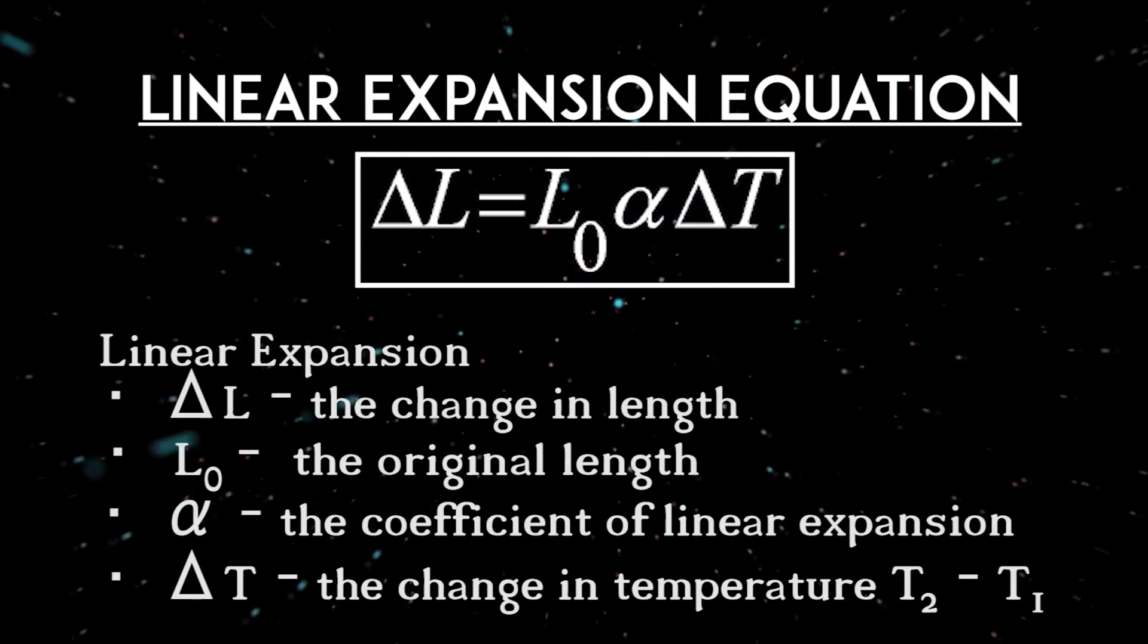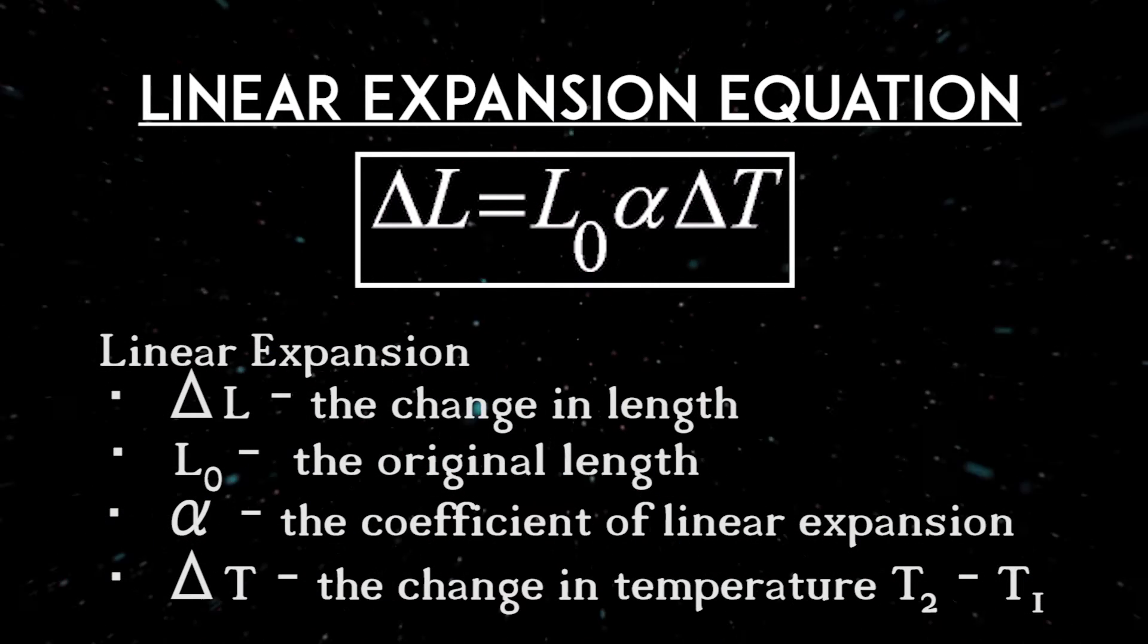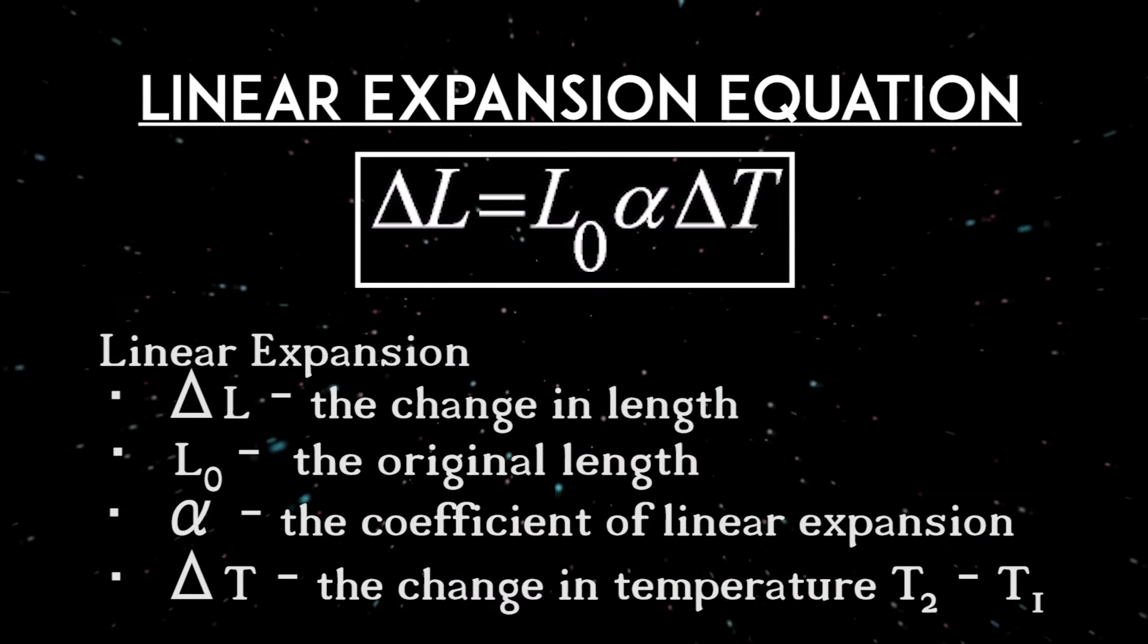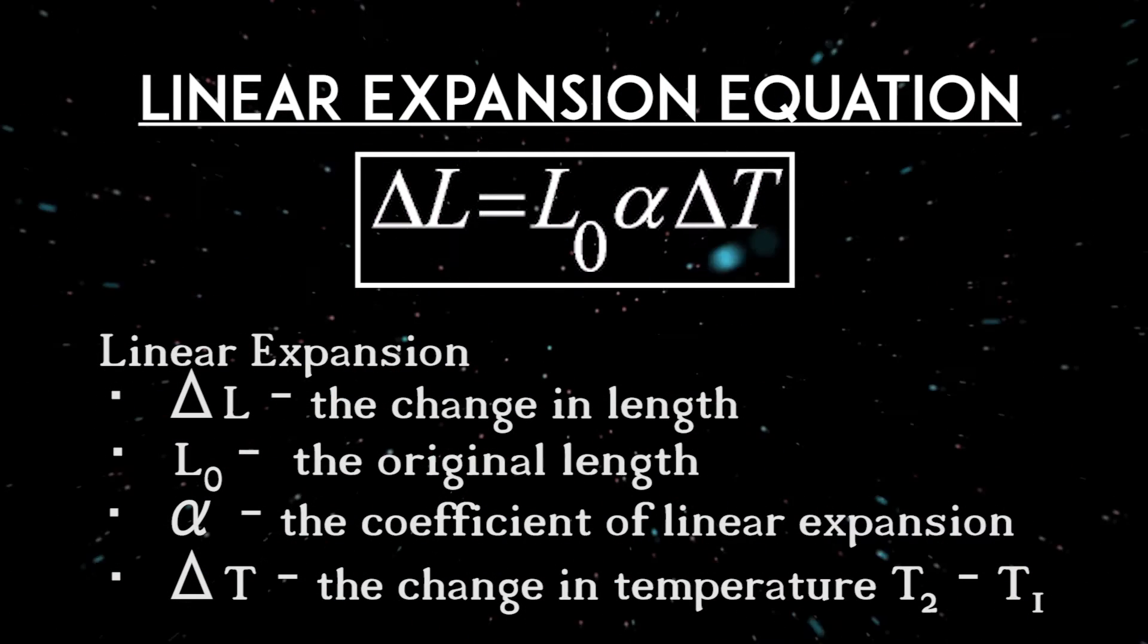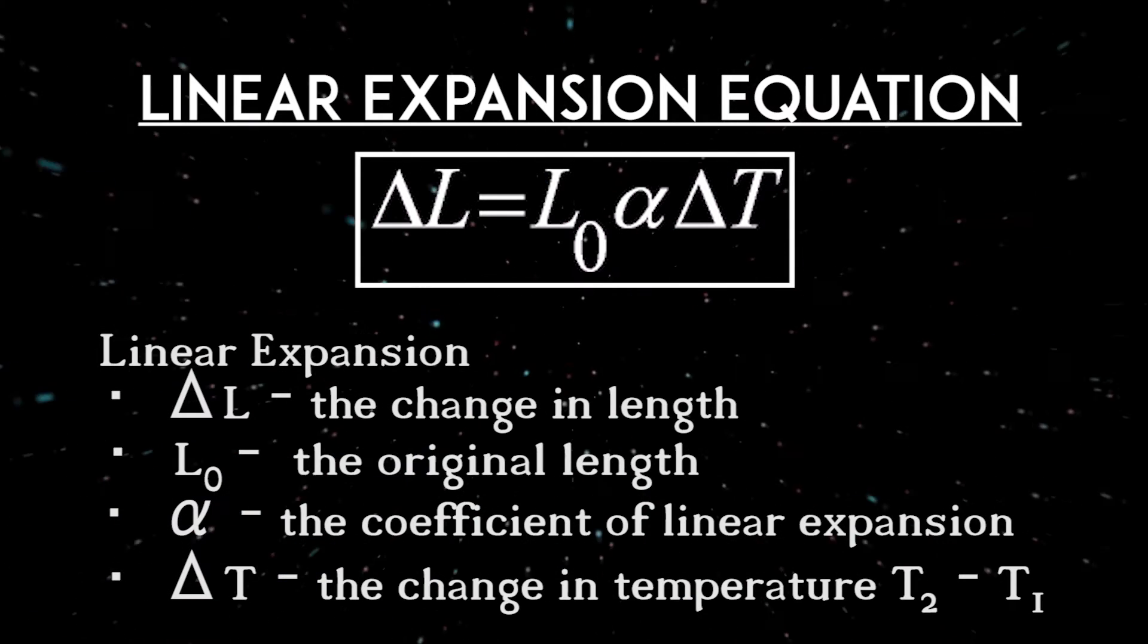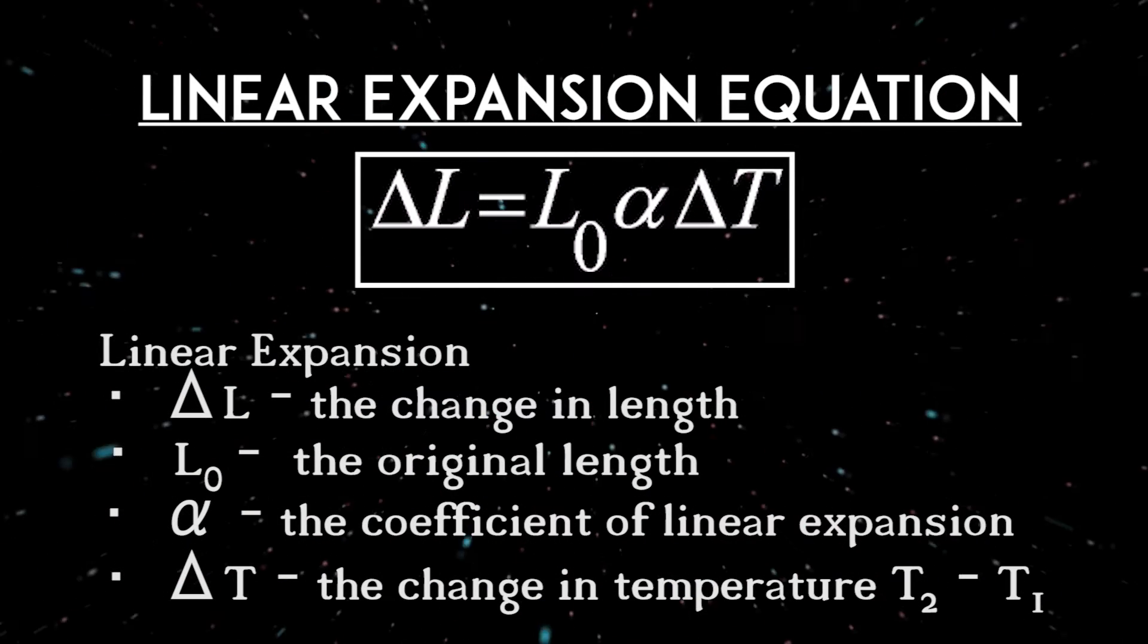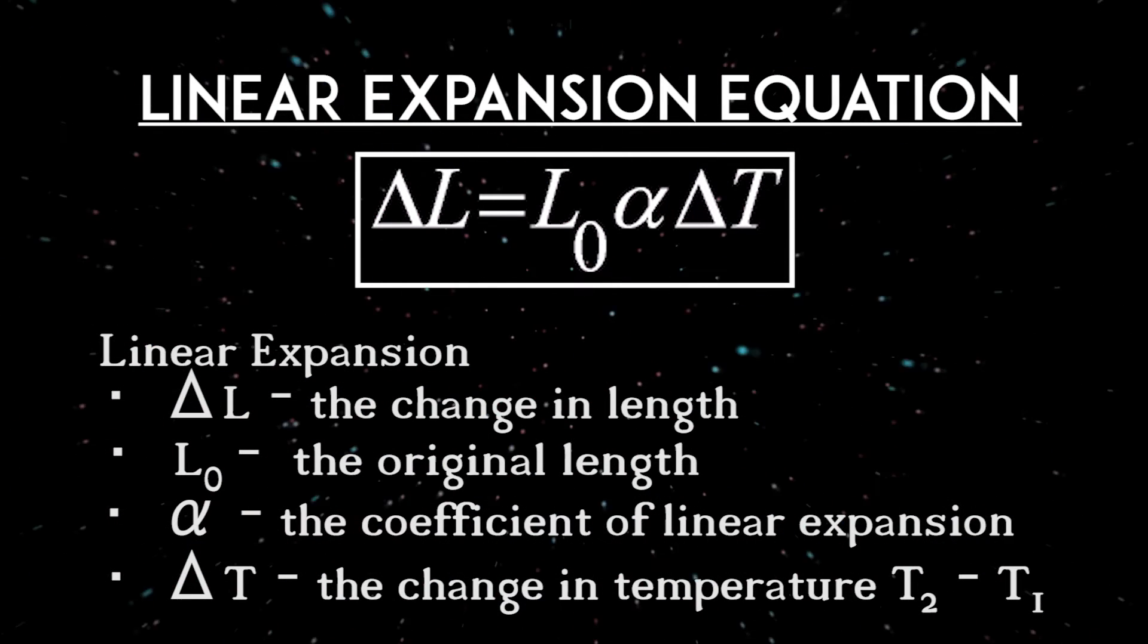Note that alpha is different for every solid, but is easy to look up for common substances. So the change in length is positive for a temperature increase and negative for a temperature decrease. The larger the value of alpha, the larger the change in length for a given temperature increase.